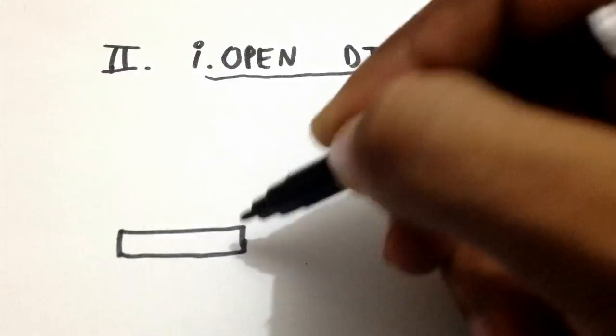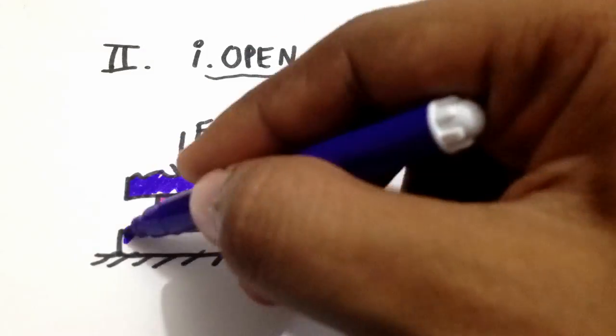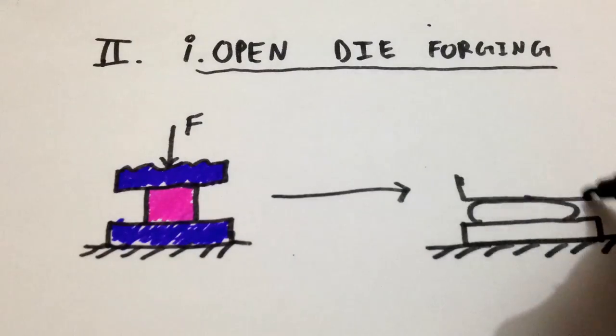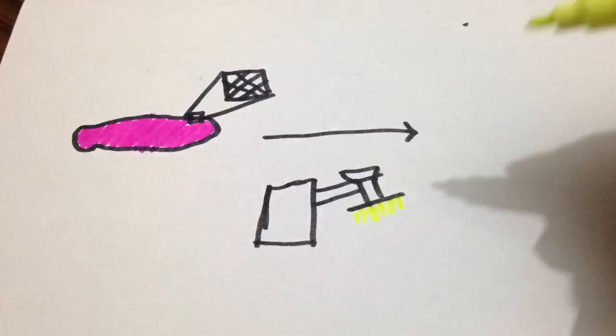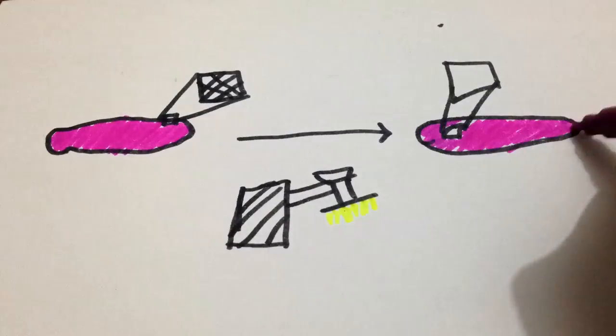First, open-die forging which consists of a solid workpiece placed between the two flat dies in which the lower die is fixed and the upper die is moving. This reduces the height of the workpiece and compresses it. Open-die forging operations produce preforms of workpiece, hence further finishing is needed to refine the parts to its final shape.